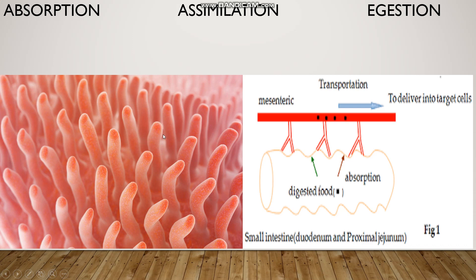Villi are finger-like projections seen on the inner walls of the small intestine. The digested food materials or nutrients are then carried by the blood to different parts of the body, where the nutrients are assimilated or utilized for the synthesis of complex molecules.